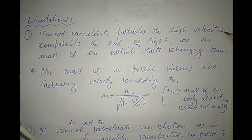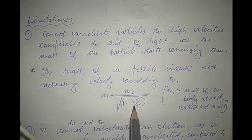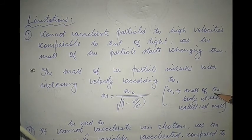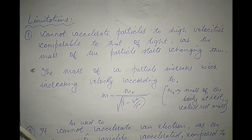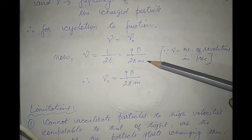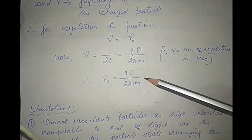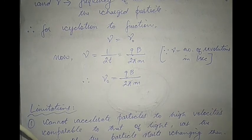In relativity, when a body moves at very high speed comparable to light, its mass is given by m = m₀ / √(1 − v²/c²), where v is the velocity, c is the velocity of light, and m₀ is the rest mass. So in a cyclotron, if the particle's mass starts increasing, the frequency at which it describes semicircular paths changes and no longer matches the frequency of the alternating potential — the particle goes out of step and the cyclotron stops working properly.